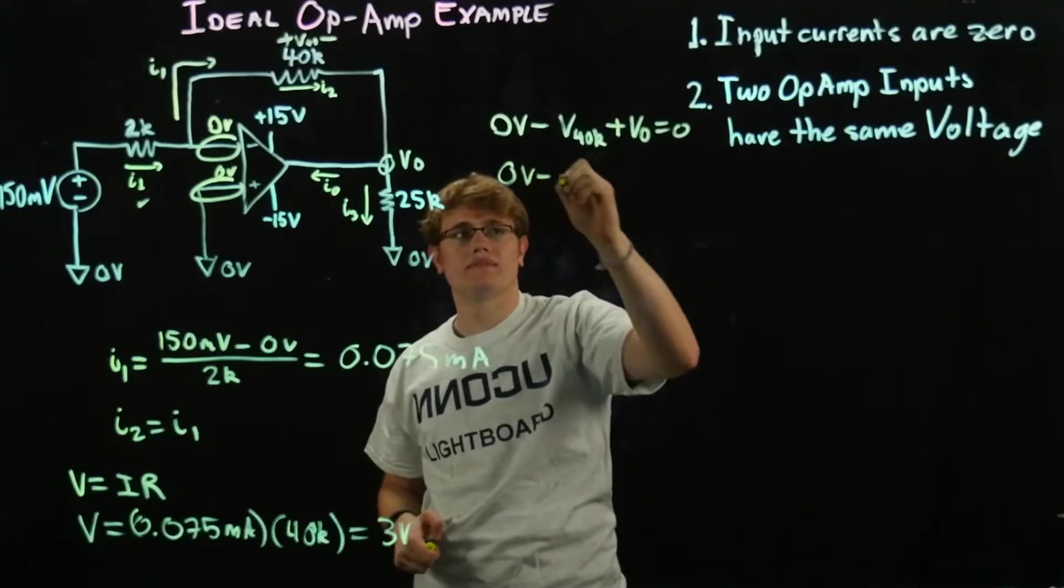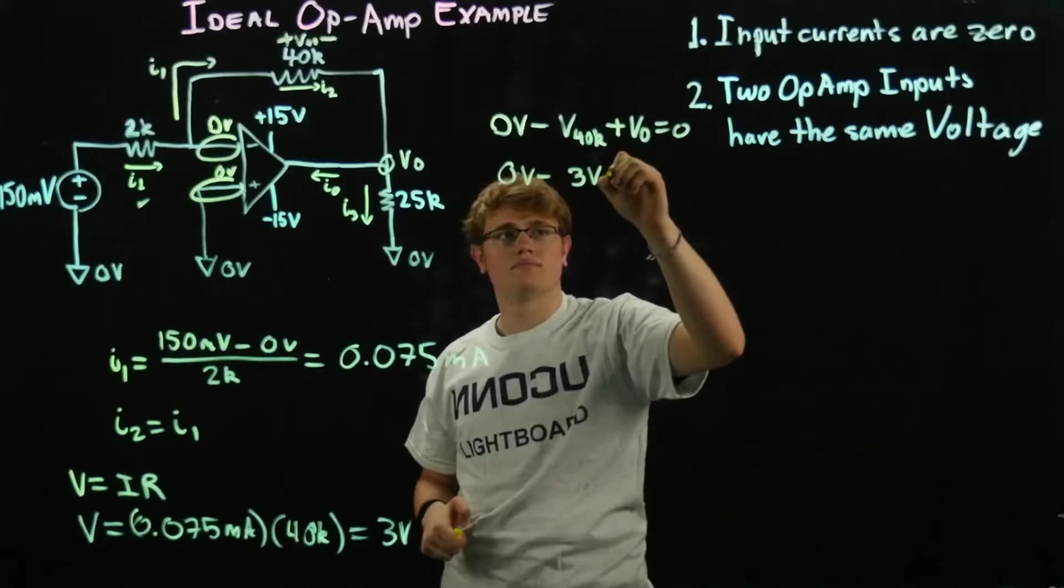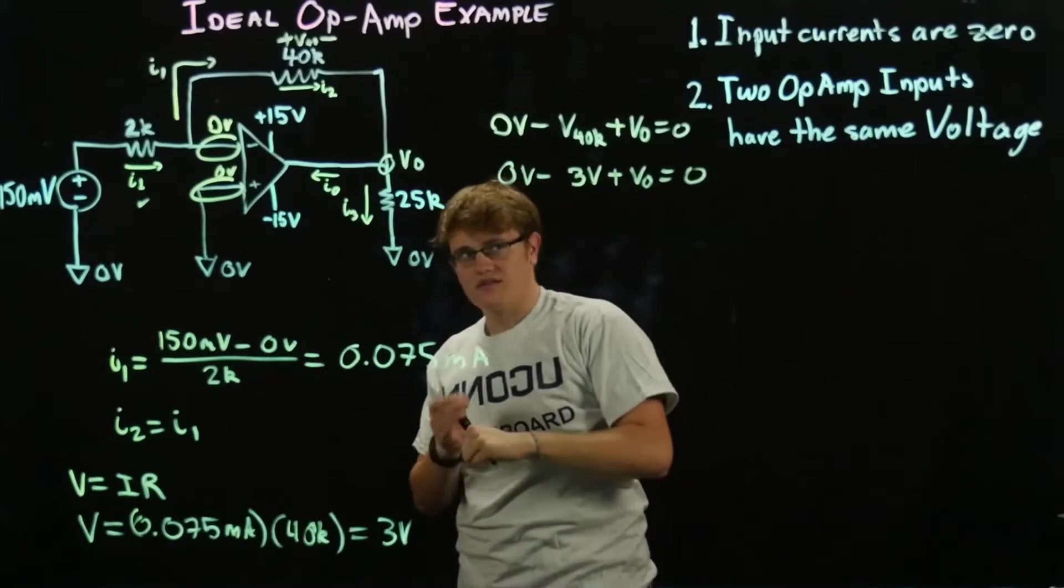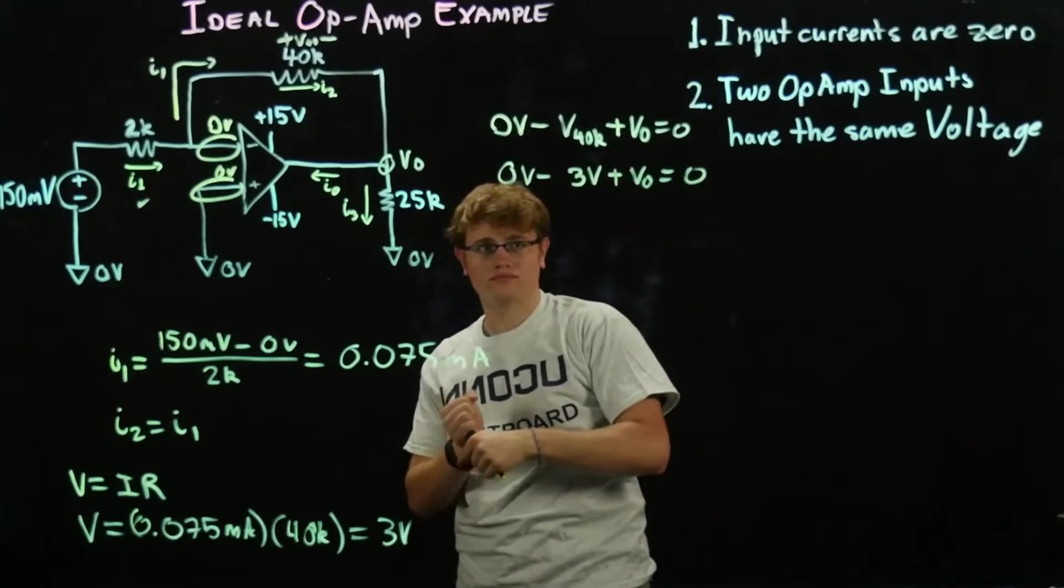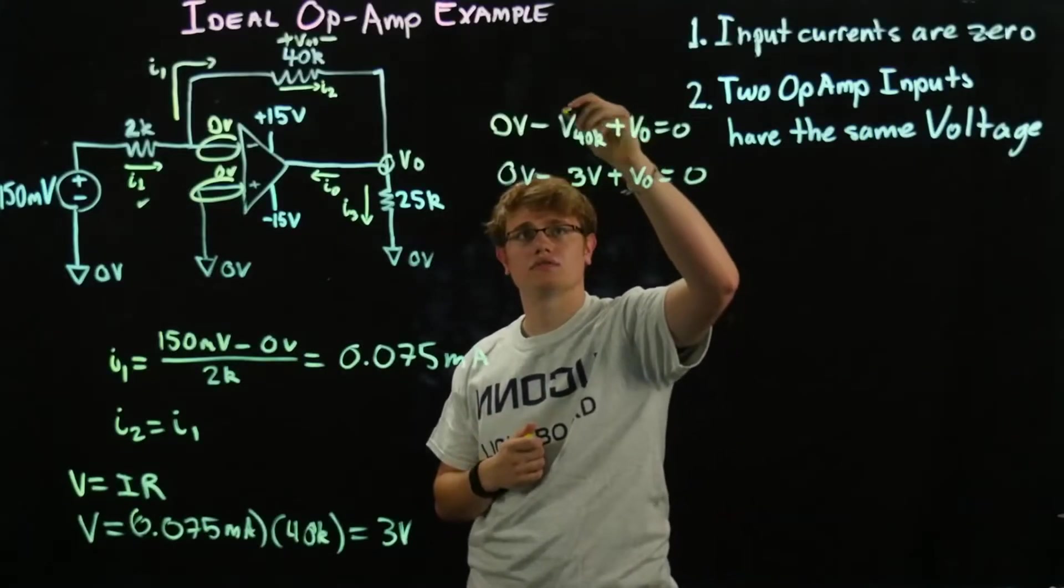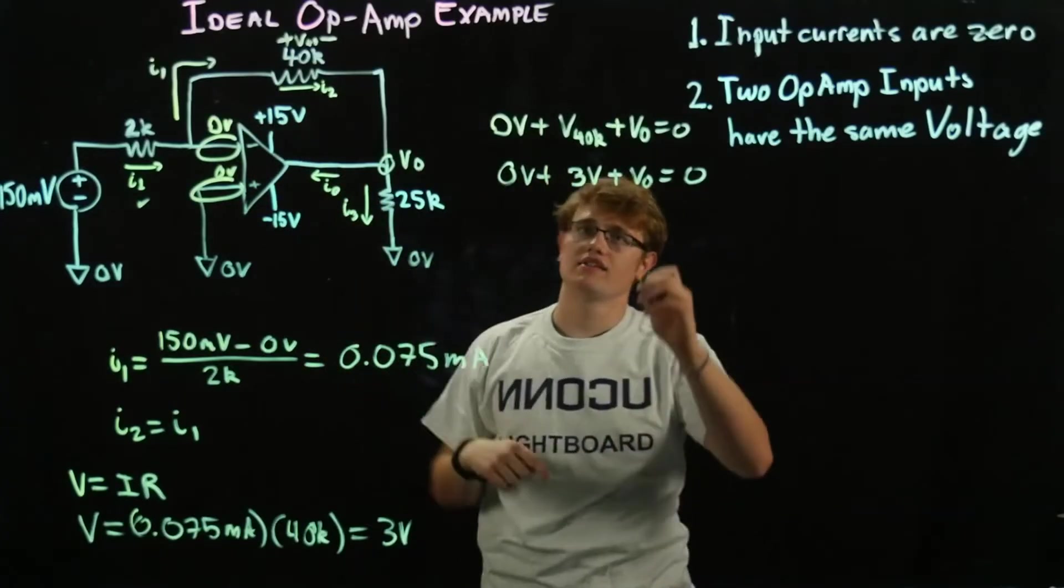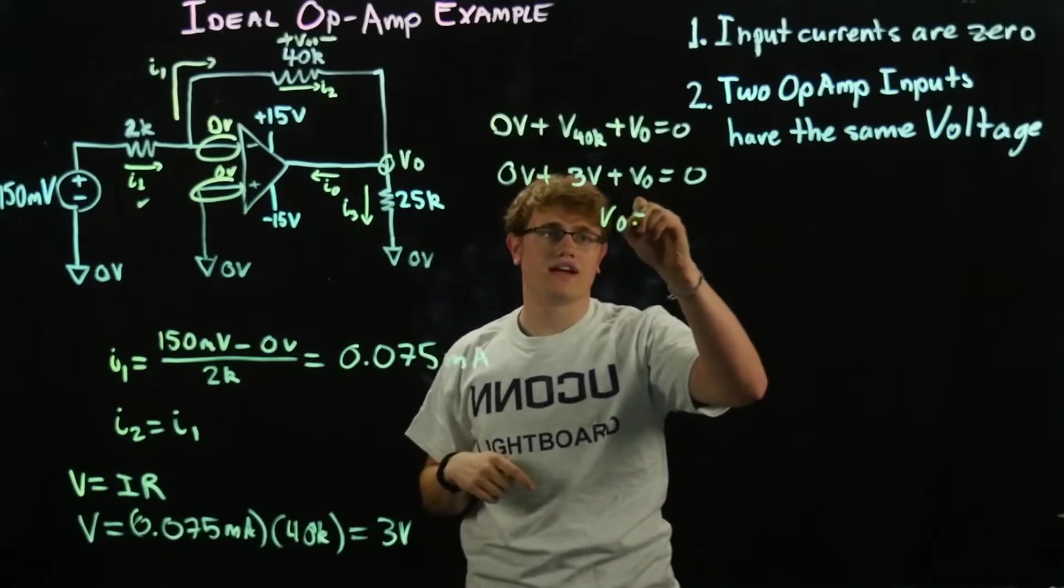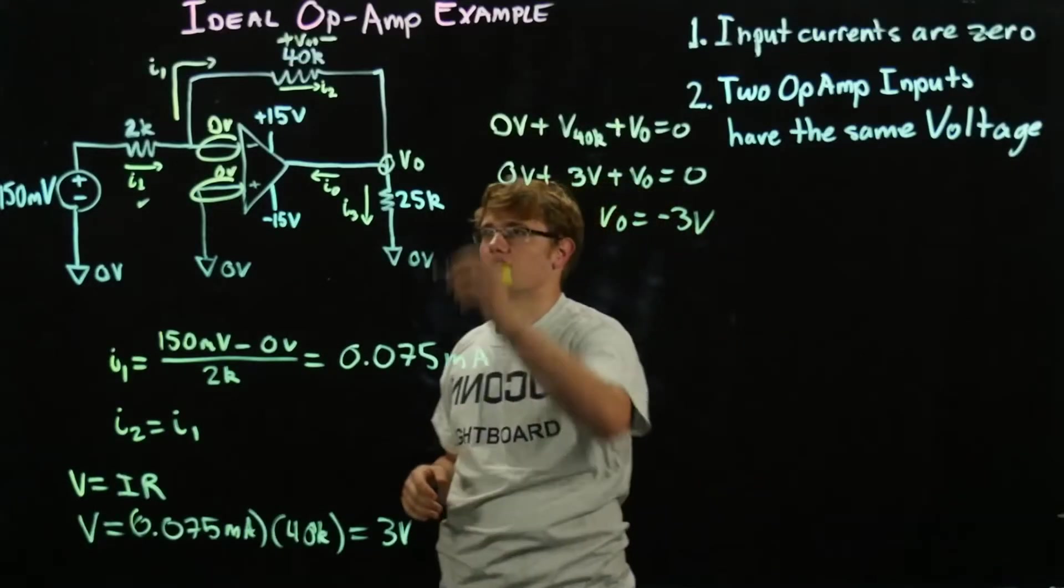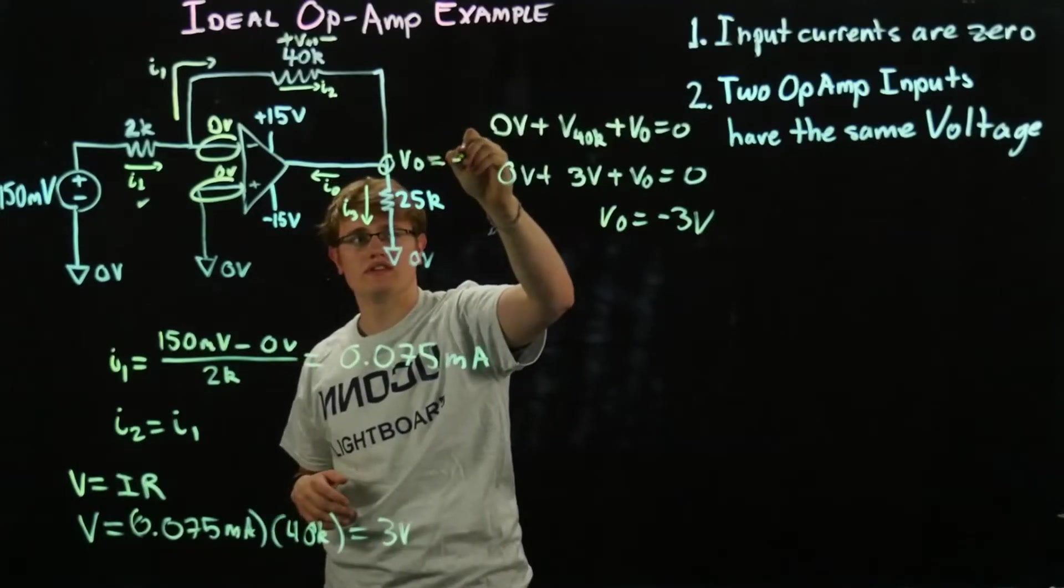If we know zero volts minus 3 volts plus VO equals zero, then we know, oh wait, here let's see, we're not going to subtract that, we're going to add it. We know that VO has to be negative 3 volts. So this V is 3 volts, that's VO. We found our VO, it's going to be negative 3 volts.